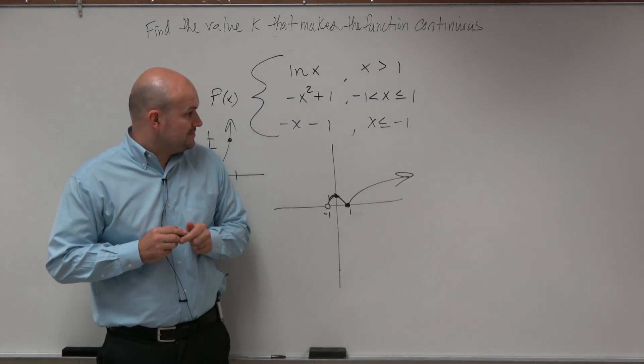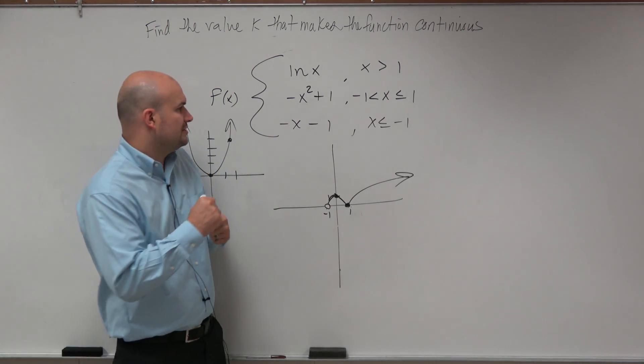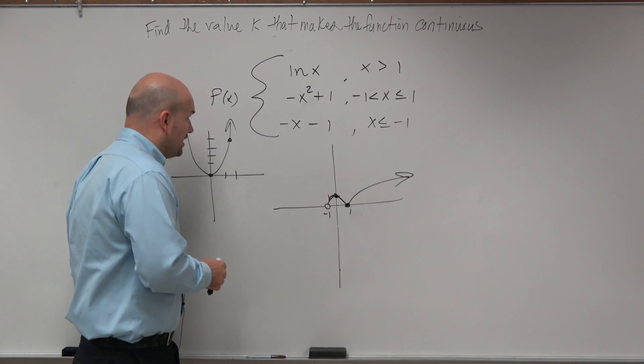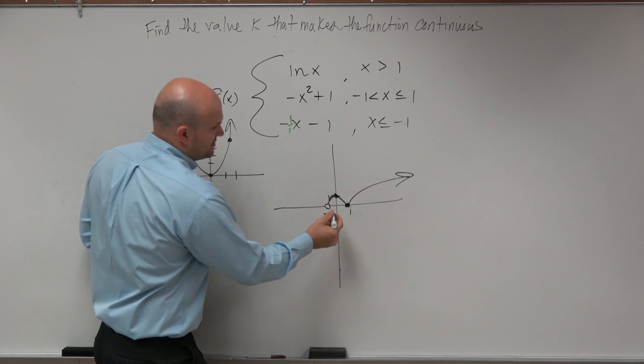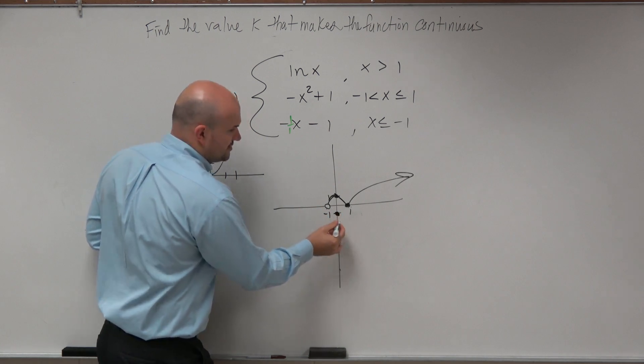Then, last but not least, guys, we have a line. You can remember this line has a slope of 1 over 1, and it has a y-intercept of negative 1. So I go down to negative 1, make a nice little dot.